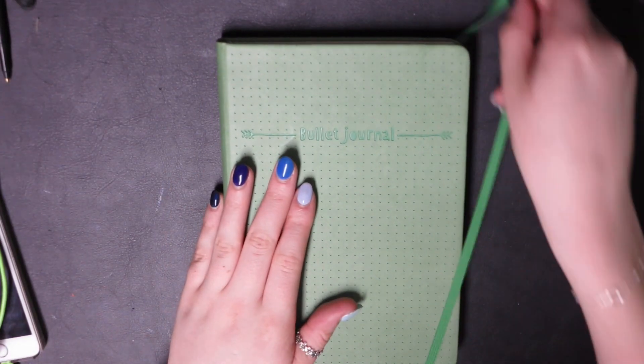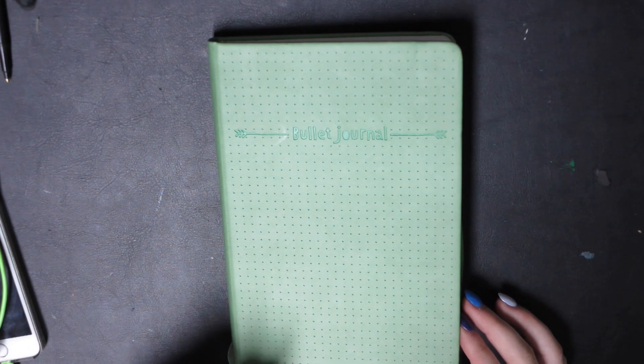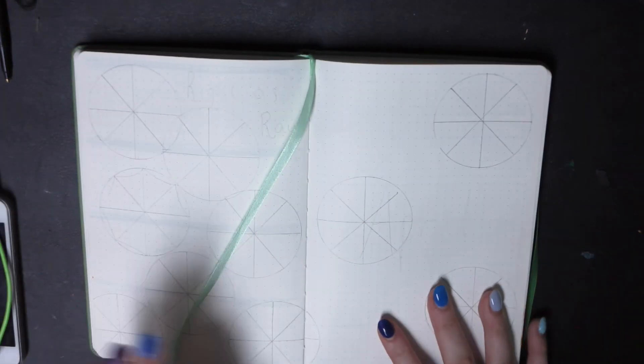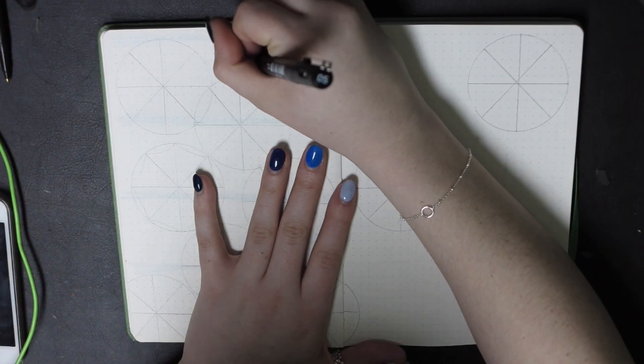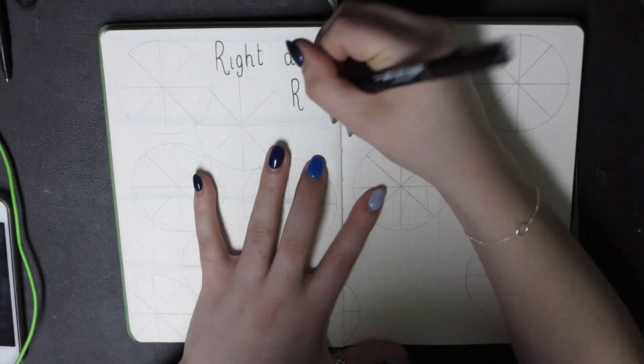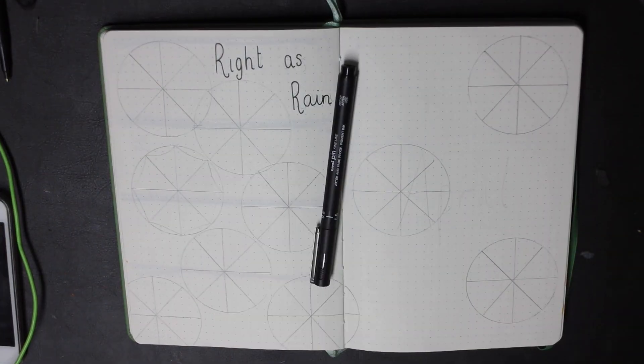Starting my bullet journal the way I always do, I'm going to be starting off with a quote. So the quote is Writer's Reign. It's very small, very simple, but it just was my mood at this moment in time.